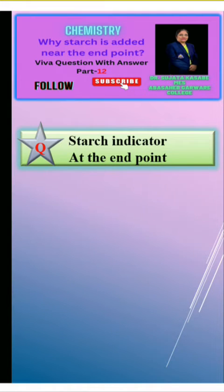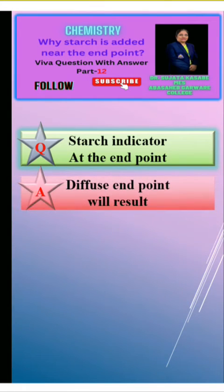There are two reasons. First is, a diffuse end point would result from the slow dissociation of the starch and iodine complex if a large amount of iodine were absorbed in the starch.